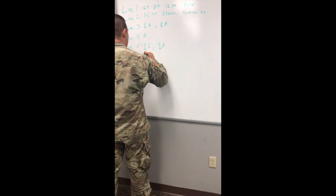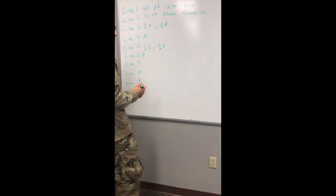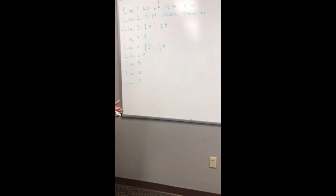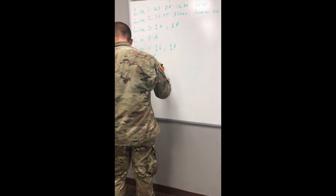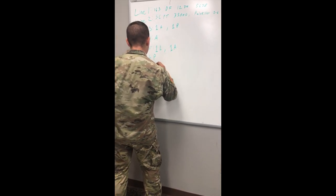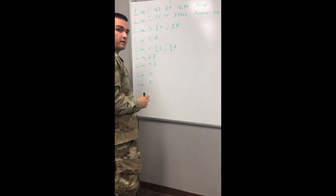Line six is papa. We've cleared out the enemy in the area but there could still possibly be enemies around, so papa for possible enemy in the area. Line seven alpha is our method of marking because we're using panels.